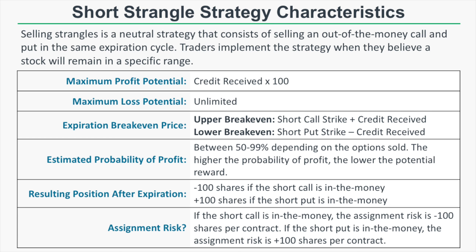The break-even prices of a short strangle are the short call strike price plus the credit received, and the short put strike price minus the credit received. That credit widens your break-even points beyond your short strikes. The estimated probability of profit really depends on the options you sell — typically anywhere between 50% and 99%. The further out the options you sell, the higher your probability of profit, but you'll also have less potential reward since you're selling cheaper options.